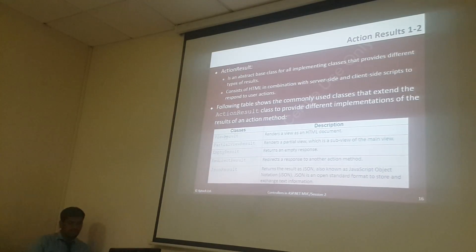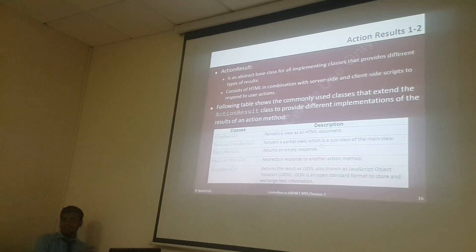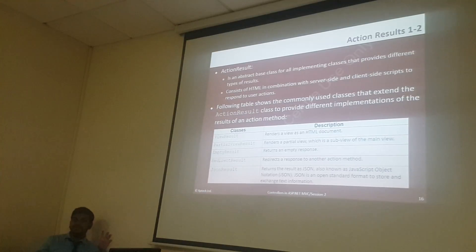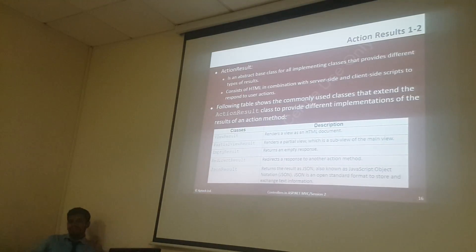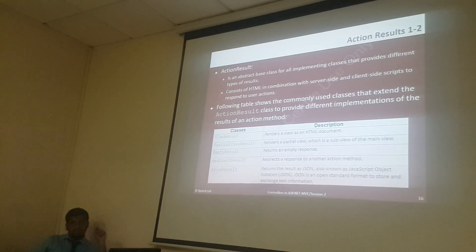So, in ActionResult there are actually different types of classes. ViewResult — it has a view as an attachment. Or PartialViewResult — partial view means sometimes we are going to create a view half in one program and half in another program. Suppose if you want to create one view page by merging two pages, so that time we are using partial view. You will see that when we are creating a view — I will show you how you can create two separate view pages and make it as one page. That is the partial view.